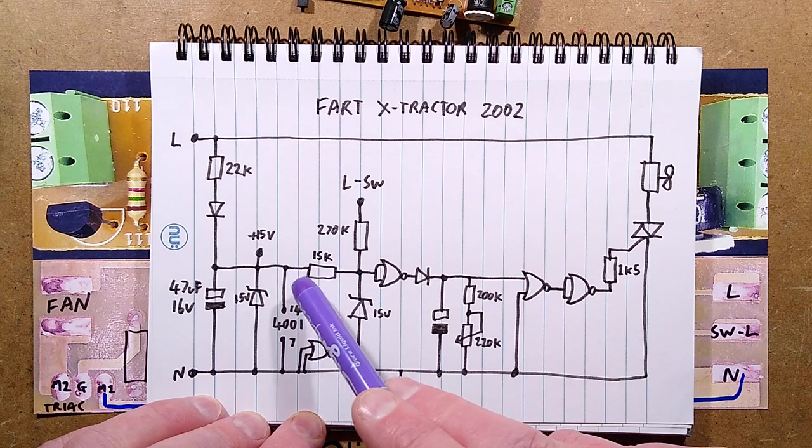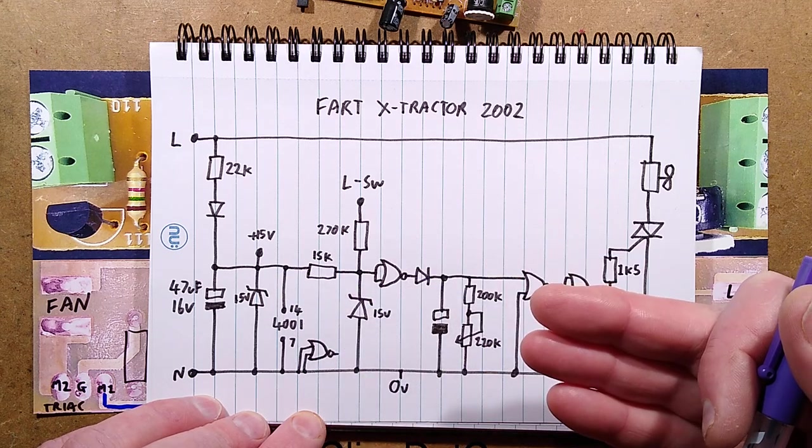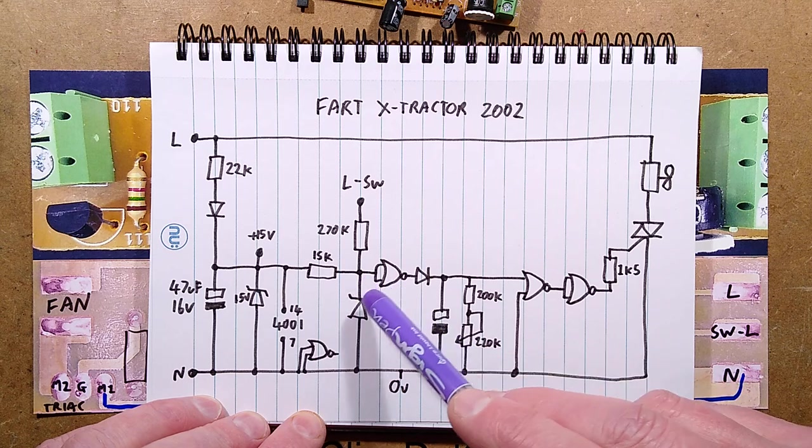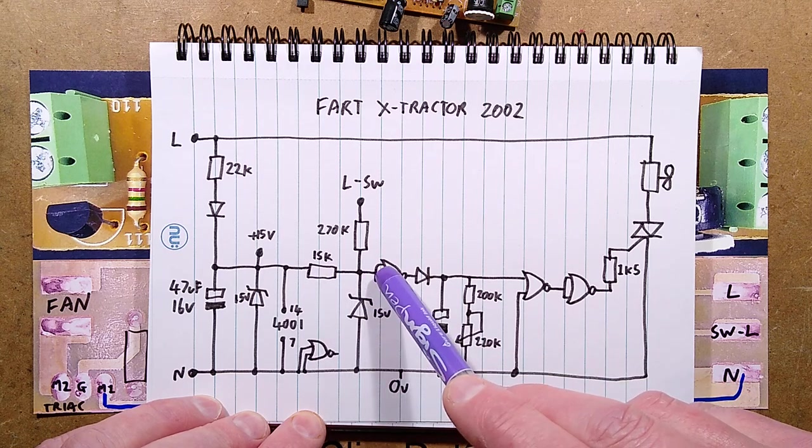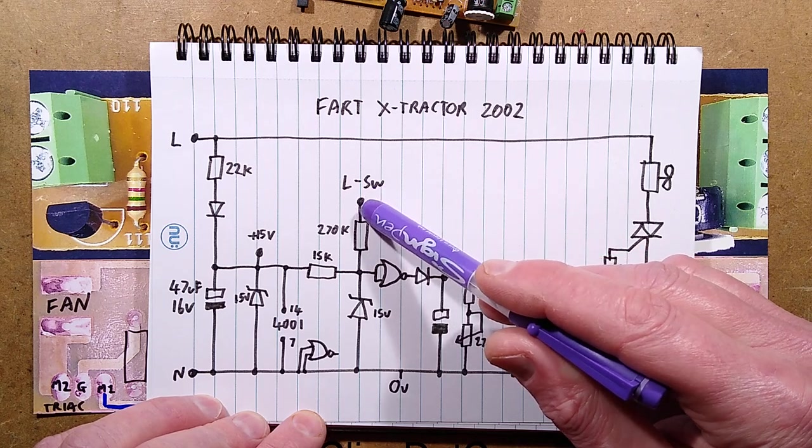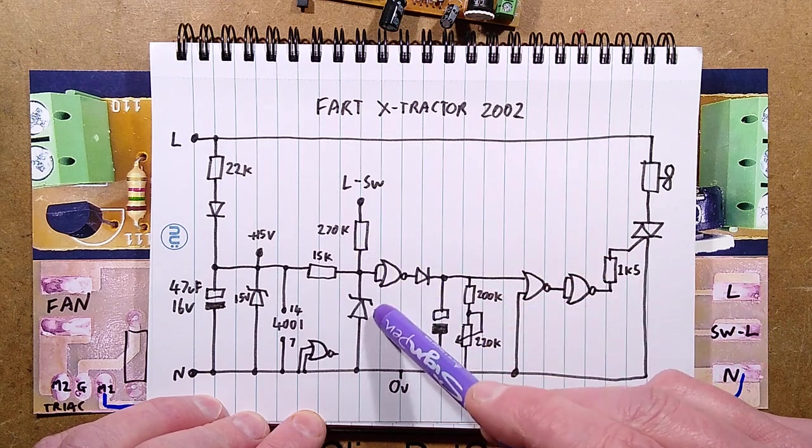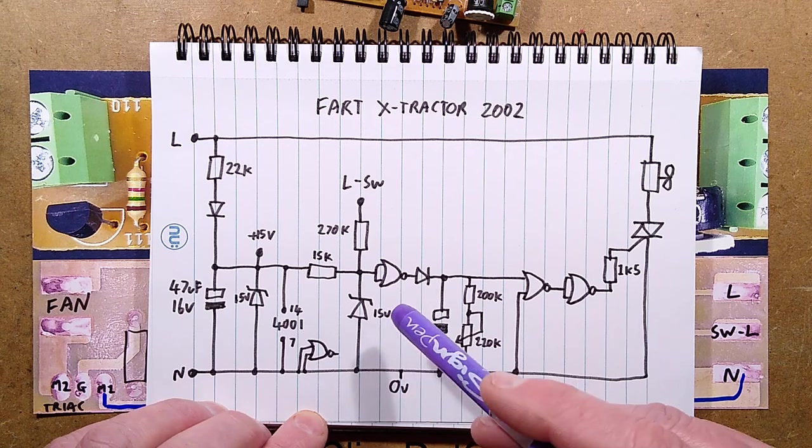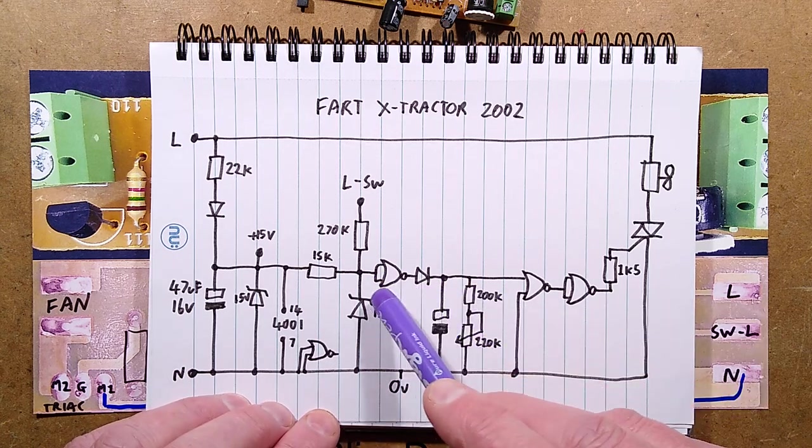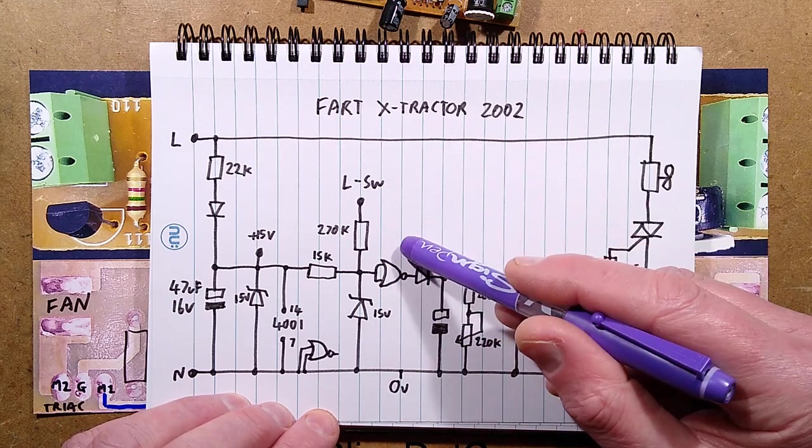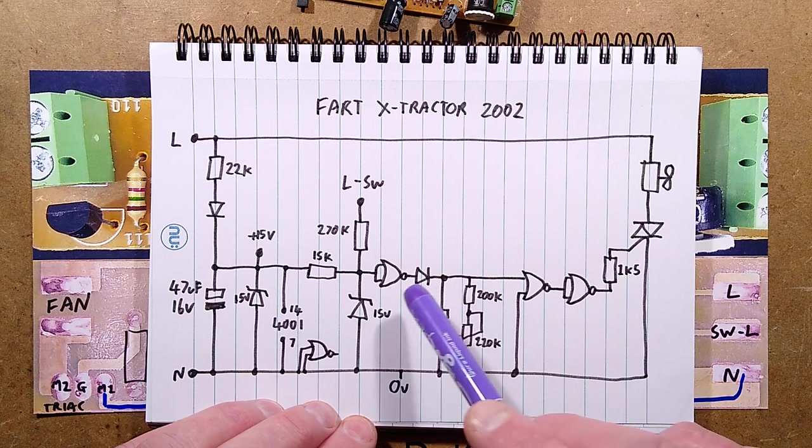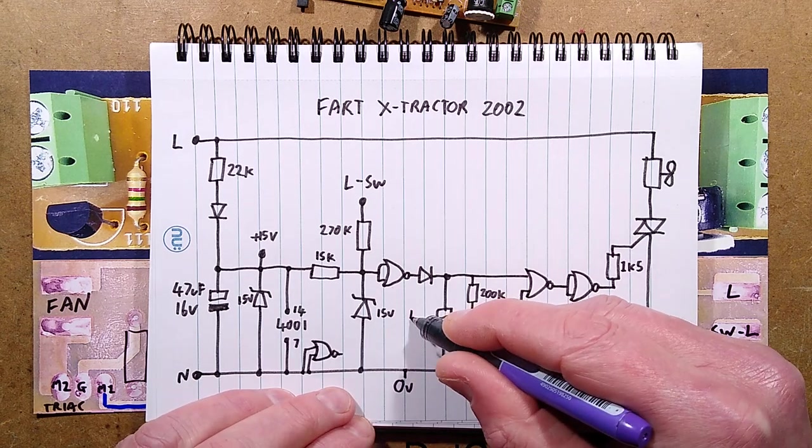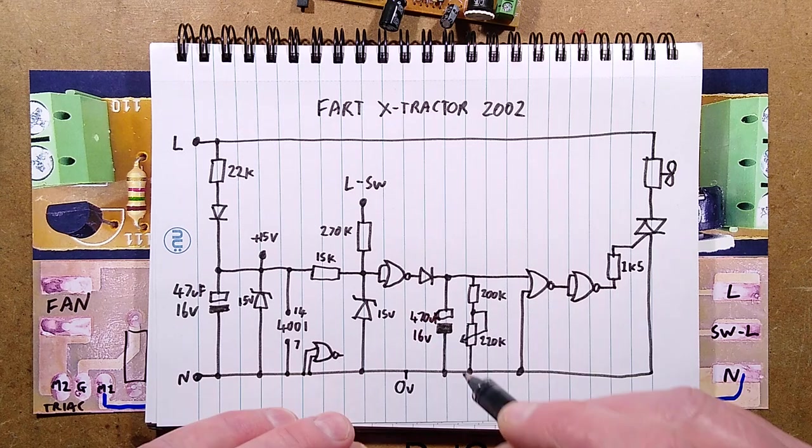...the input to this gate up high, so when the light switch hasn't been turned on, it pulls the input up high. When the light switch is turned on, current travels via this 270k resistor. There's a zener diode to cap that, but because it's AC it's actually pulling the input negative, which means the output will go positive in a square wave. When it does that, current flows through this diode and charges up this capacitor here, which is 470 microfarad 16 volt, and that is the timing capacitor.